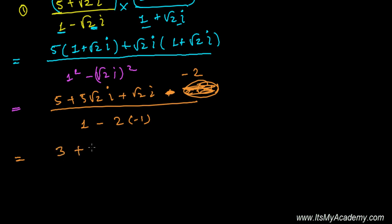Plus here, you can take i common—no, no need to take common. It's 5√2i and 1√2i, so it will be 6√2i divided by, it's 1 minus minus 1, which is plus, so it's 3 + 6√2i divided by 3.